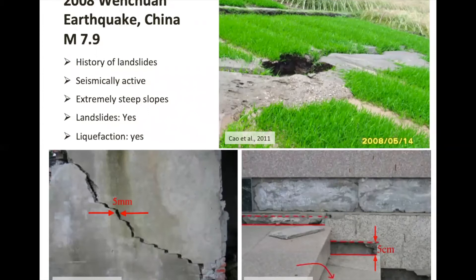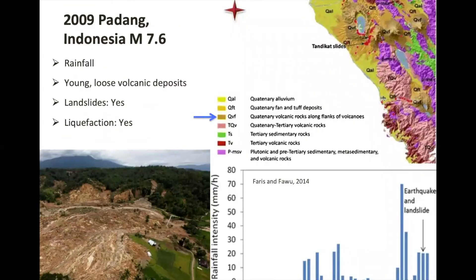The Wenchuan earthquake exhibited liquefaction up to 20 meters deep. On September 30, 2009, a magnitude 7.6 earthquake occurred off the coast near Padang. The event killed over 1,000 people and triggered massive landslides, which account for about 60 percent of the fatalities. Continued seismic activity is expected in the area, so it's really important that we understand these landslide events in preparation for future hazards.